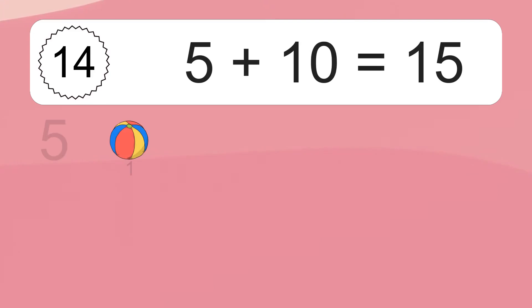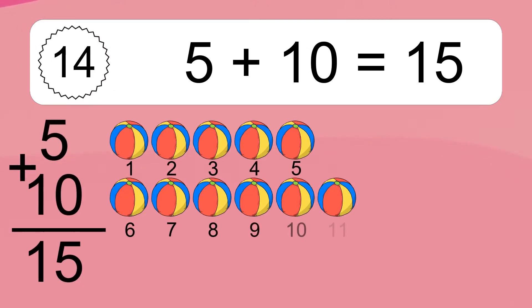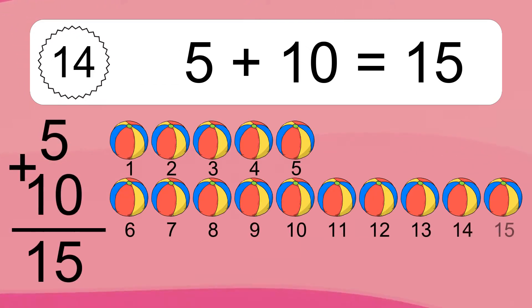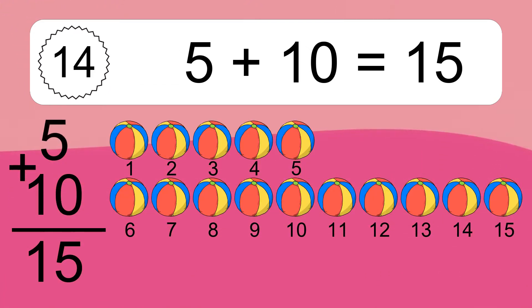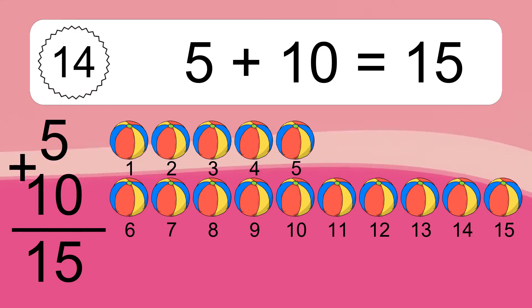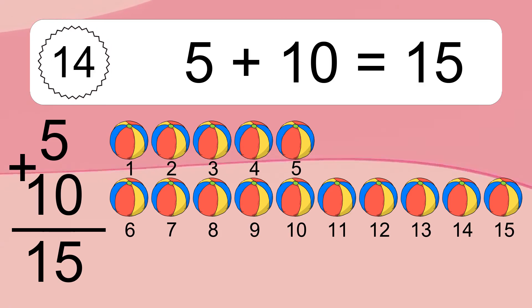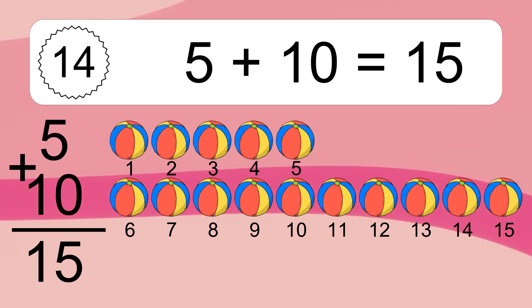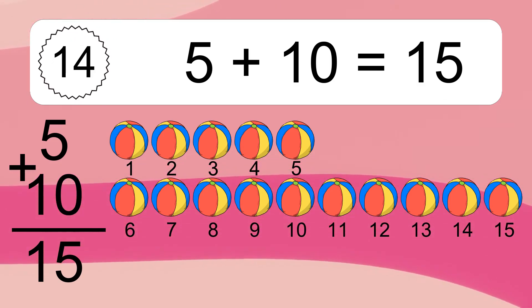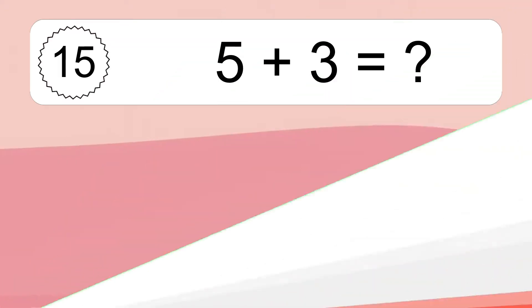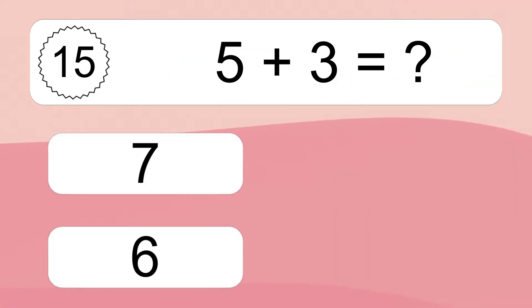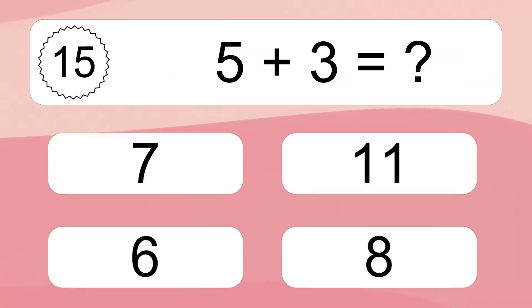5 plus 10 equals what? 5 plus 10 equals 15. Let's count it. 1, 2, 3, 4, 5, 6, 7, 8, 9, 10, 11, 12, 13, 14, 15.